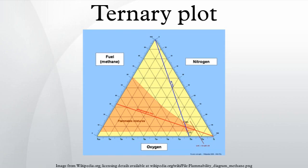It is used in physical chemistry, petrology, mineralogy, metallurgy, and other physical sciences to show the compositions of systems composed of three species. In population genetics, it is often called a Gibbs triangle or a de Finetti diagram.